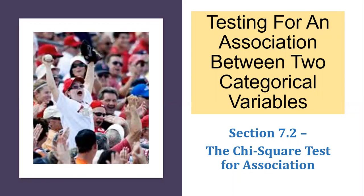Greetings statistics scholars and welcome to another video in our sequence on doing statistical inference. In this video we'll be talking about testing for an association between two categorical variables. It's designed to go with section 7.2 of the text by Locke, and in it we'll be looking at the chi-squared test for association.